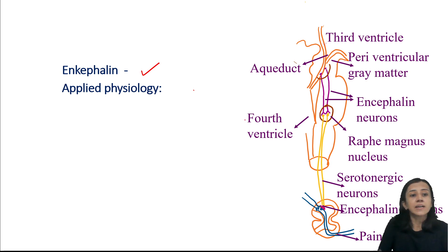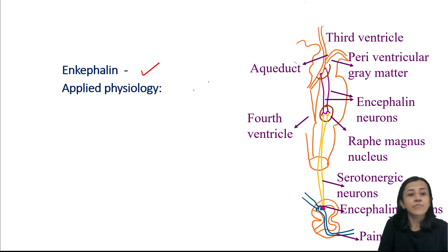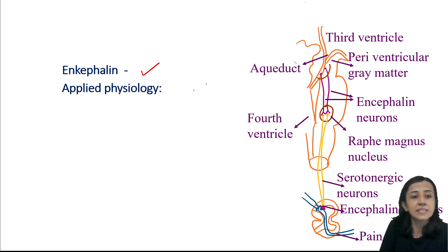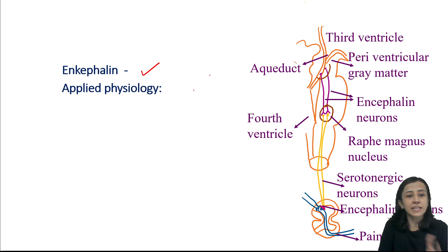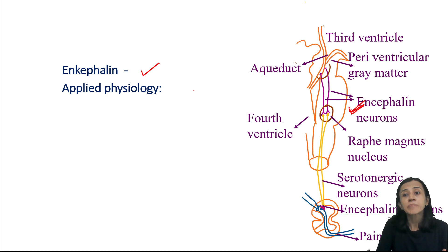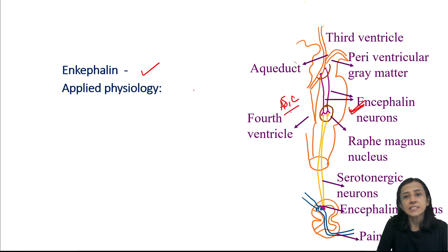An important applied aspect: amitriptyline alleviates pain by increasing the level of serotonin. The function of substance P in these neurons and its relation with serotonin is not fully known. But the key point is that enkephalin neurons cause pre- as well as postsynaptic inhibition of A-delta and C fibers.